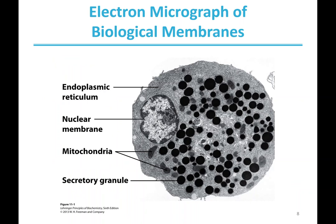Selective permeability is really important because without it, the contents inside would be the same as outside — not conducive to life. This picture shows the many membranes inside a eukaryotic cell: the plasma membrane on the outside, plus the endoplasmic reticulum, nuclear membrane, mitochondria with their own membranes, and secretory granules. There are a lot of membranes operating inside a eukaryotic cell.